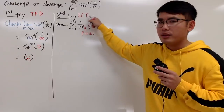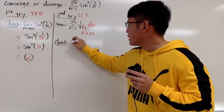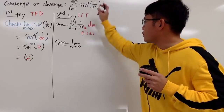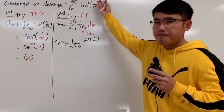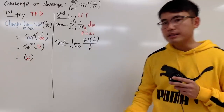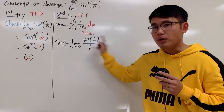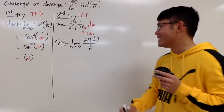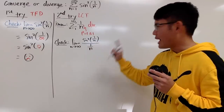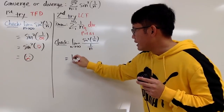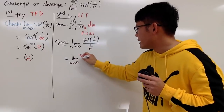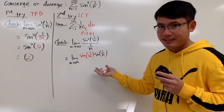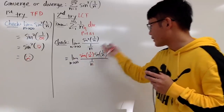Using the limit comparison test, we check the limit as n goes to infinity, with a_n on top and b_n on the bottom: sine squared of 1 over n divided by 1 over n. If you substitute infinity you get 0 over 0, so we need to work this out. Sine squared is sine times sine, so we have the limit of sine of 1 over n times sine of 1 over n, all divided by 1 over n.